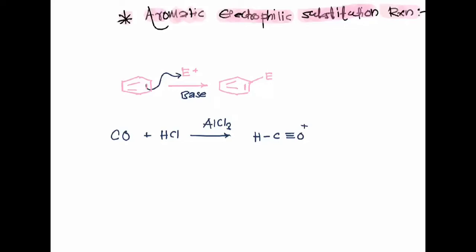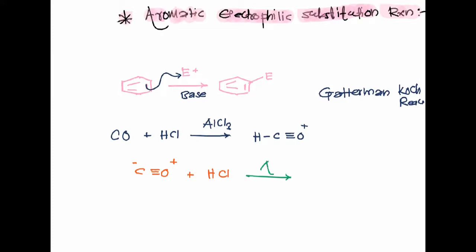We will discuss the Gattermann-Koch reaction, which is one of the well-known and basic reactions. In this reaction, we are going to mix carbon monoxide with hydrochloric acid. Carbon monoxide is structurally represented as a molecule, and it reacts with HCl in the presence of AlCl3.